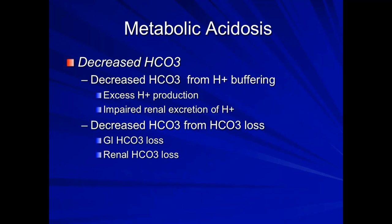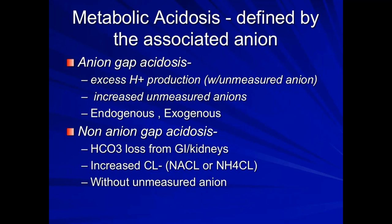Metabolic acidosis is a decreased bicarb — that's it. There are only two ways to get a decreased bicarb: your body makes extra hydrogen and you buffer the bicarb down, which happens with excess hydrogen production or when the kidneys can't excrete the hydrogen; or you can lose bicarb directly. The two places you can lose bicarb are the kidneys and the gut — pee and poo. So those are the only ways to get a low bicarb: you make too much hydrogen, your kidney doesn't excrete it, or your kidneys or gut lose bicarb.